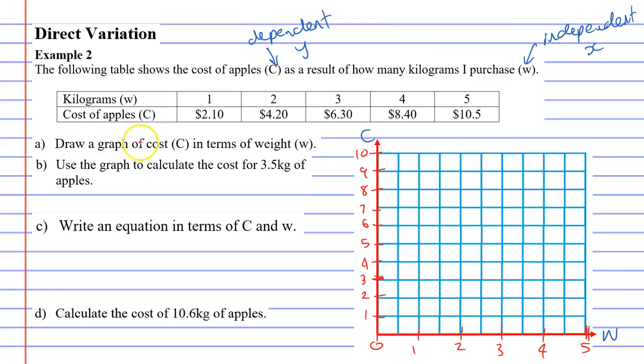We want to draw this graph by plotting points. 1 kilogram is $2.10, slightly above the 2. 2 kilograms is $4.20. 3 kilograms is $6.30. 4 kilograms is $8.40. And 5 kilograms is $10.50, so slightly above the 10. We'll draw our straight line now. And it should meet right at the origin.